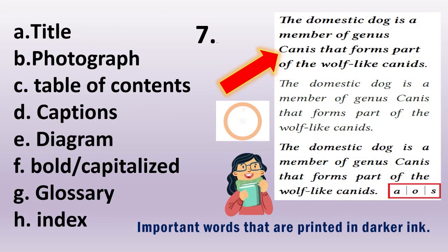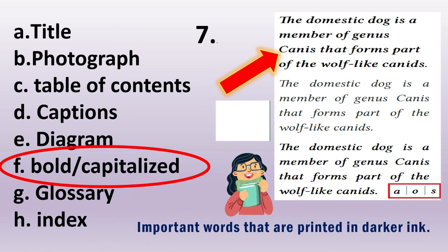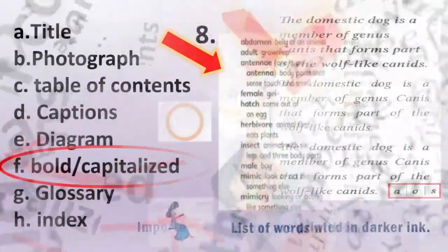For number 7, important words that are printed in darker ink. What is your answer? The correct answer is letter F — Bold or Capitalized. That's correct.